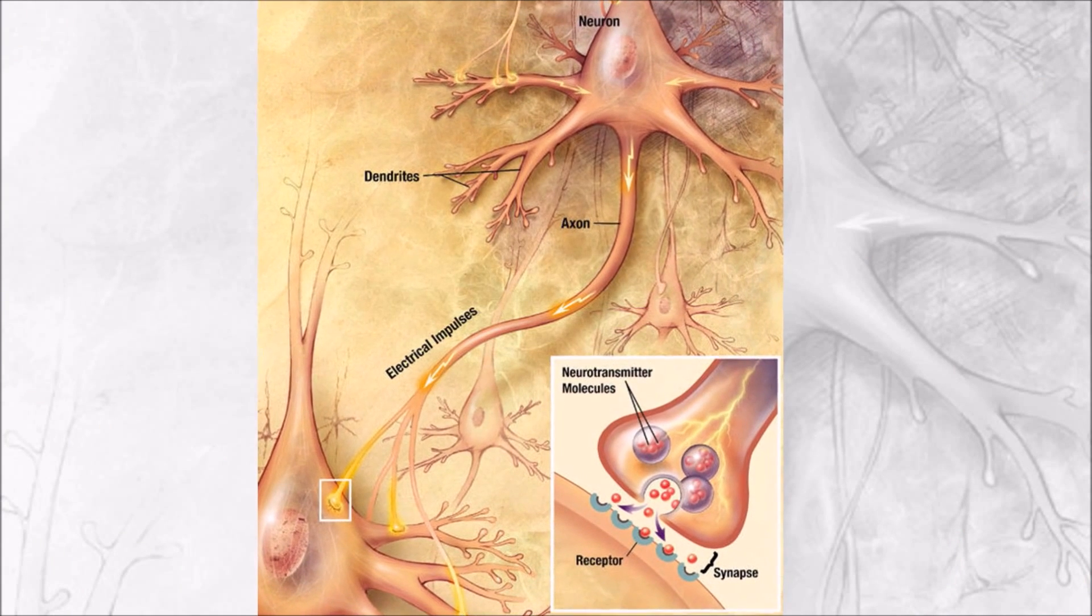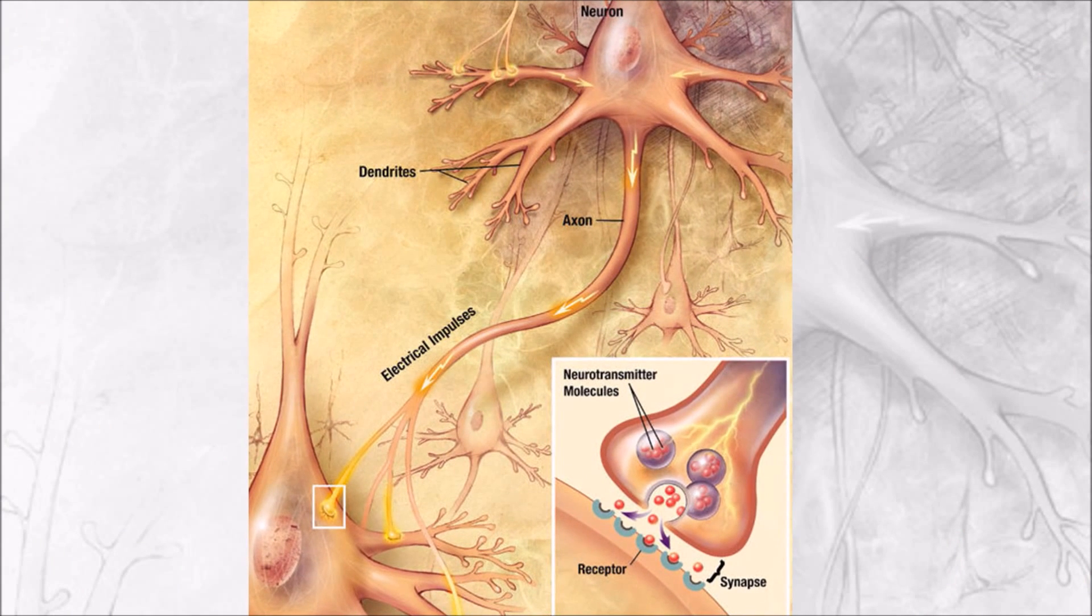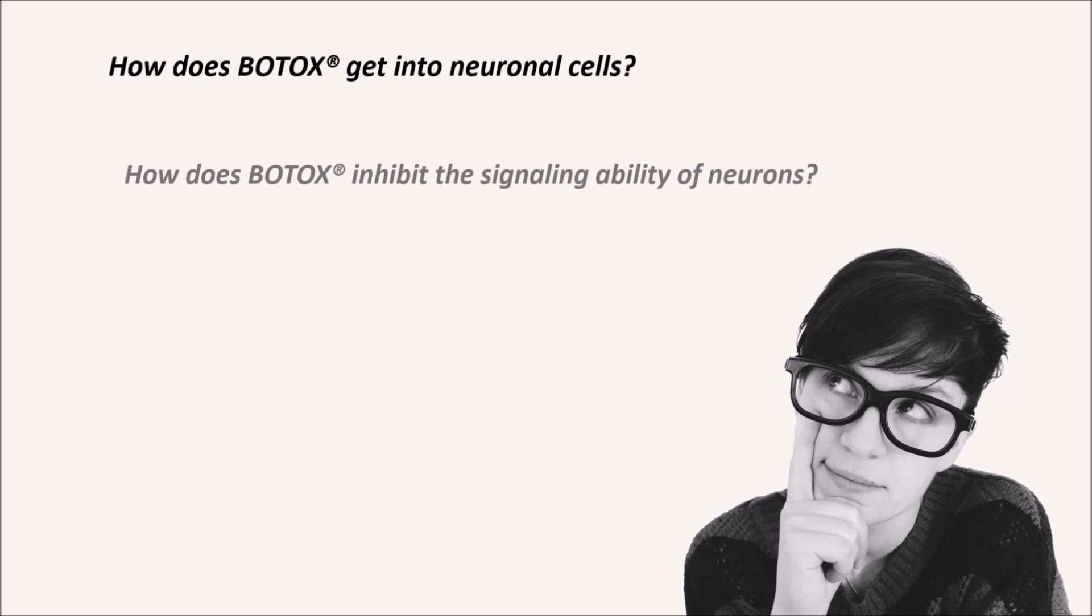Botox operates by making its way into neuronal cells and disrupting the communication lines with other cells such as skeletal muscle. So with that information in mind, you may be wondering, how does Botox get into neuronal cells? Once inside these cells, what does Botox do to inhibit the signaling ability of neurons?